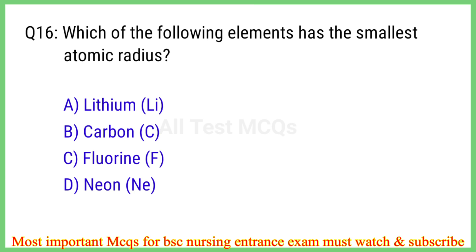Q16. Which of the following elements has the smallest atomic radius? The right answer is option D: Neon.